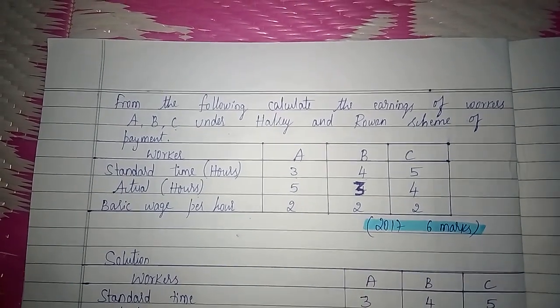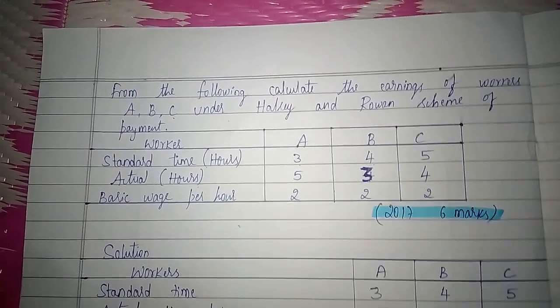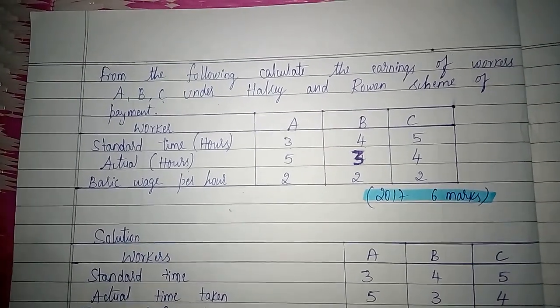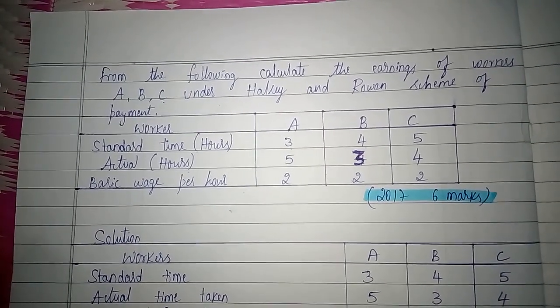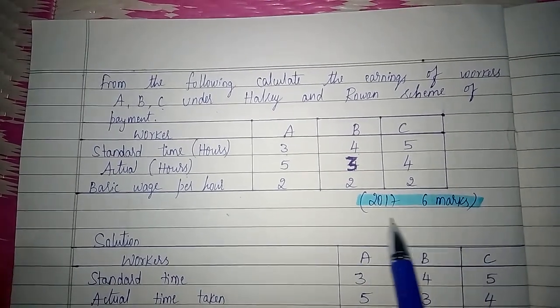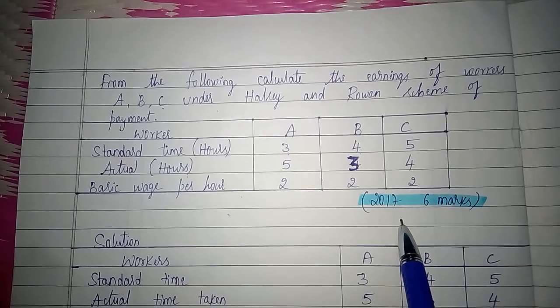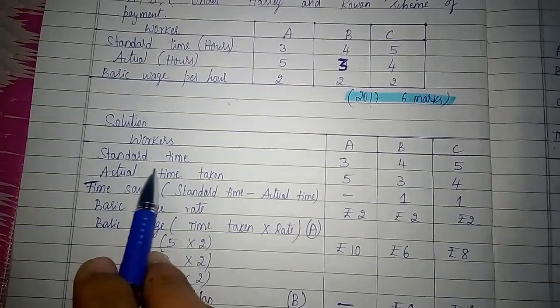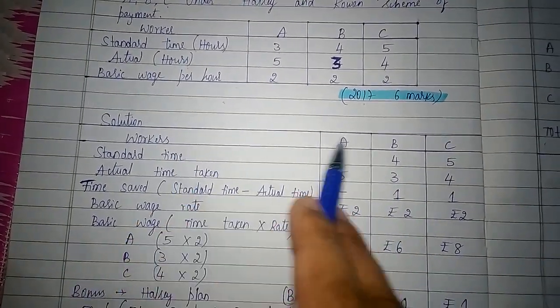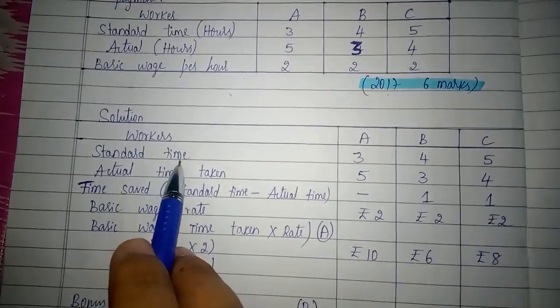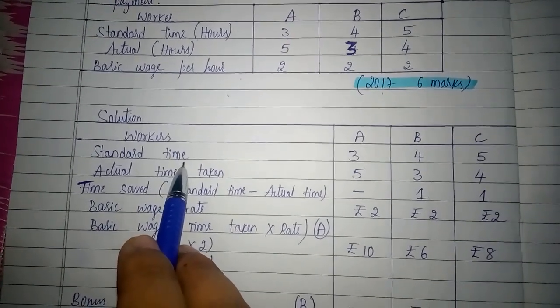By using this information, let us calculate the total earnings of all three workers under Halsey system and Rowan system. This problem was asked in Bangla University B.Com examination for six marks in the year 2017. So first let us make a table for workers A, B, C, and transfer the standard time given for the three different workers.